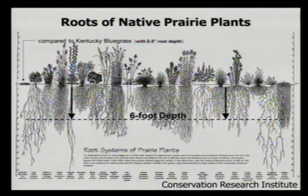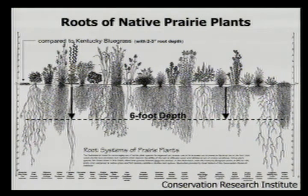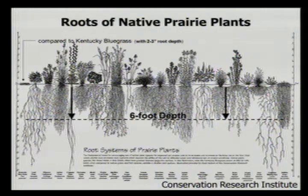Here's a diagram of root systems of native prairie plants and why they were so successful growing here. A lot of them had really deep root systems to adapt to times of periodic drought and periodic rainfall. As compared to Kentucky bluegrass, shown on the left-hand side, which has only a two-to-three-inch deep root system. Kentucky bluegrass comes from an area in Europe that gets about four times as much annual rainfall as we do in Minnesota, so it never had to develop a deep root system and doesn't do well in Minnesota's varying climate.